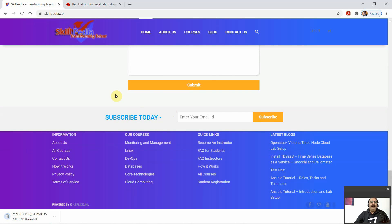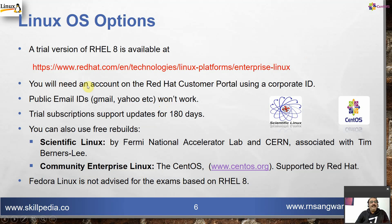You will need an account on the Red Hat customer portal using a corporate ID — public email IDs like Gmail or Yahoo won't work. The trial subscription supports updates for 180 days. You can also use free rebuilds of the same source code: Scientific Linux by Fermi National Accelerator Lab, and Community Enterprise Linux — CentOS — supported by Red Hat. Fedora Linux is not advised for the exam based on RHEL 8.